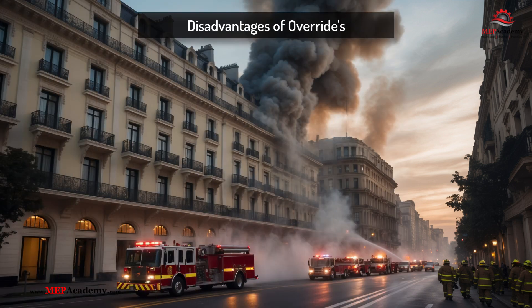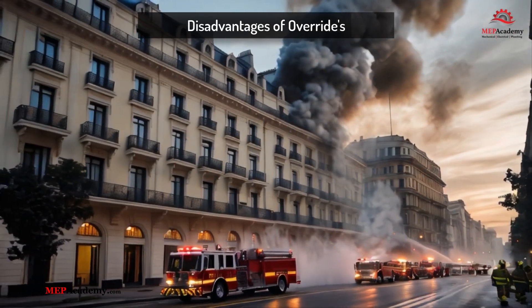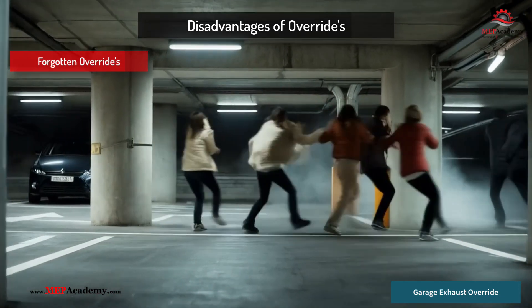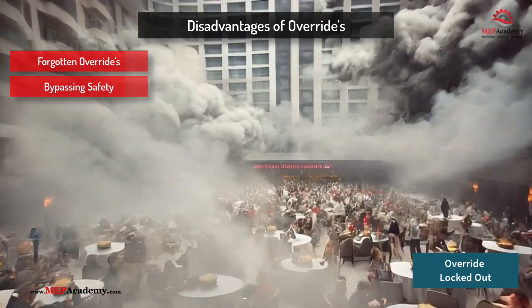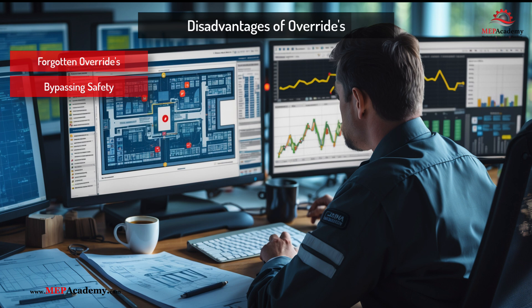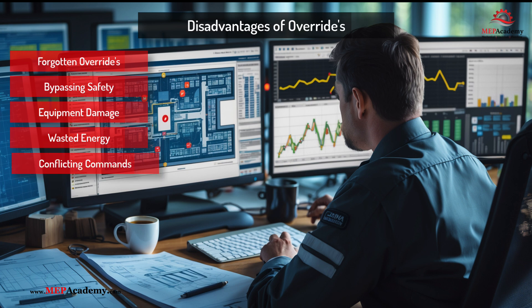Disadvantages and risks of overrides: Despite their usefulness, improper use of overrides can lead to serious operational problems. Forgotten overrides can cause unintended consequences such as frozen coils or overheating. Bypassing safety mechanisms such as overriding alarms, safeties, or critical sensors can introduce safety hazards like turning off smoke evacuation fans. Equipment damage occurs when forcing equipment on or off outside of its normal operation sequence, leading to mechanical failure or excessive wear. Energy waste and inefficiency result when overrides prevent normal energy-saving automation, increasing operating costs. Conflicting commands from multiple overrides applied to interconnected systems can cause operational conflicts.